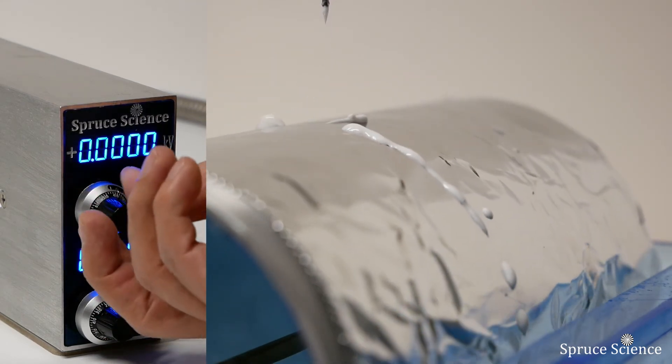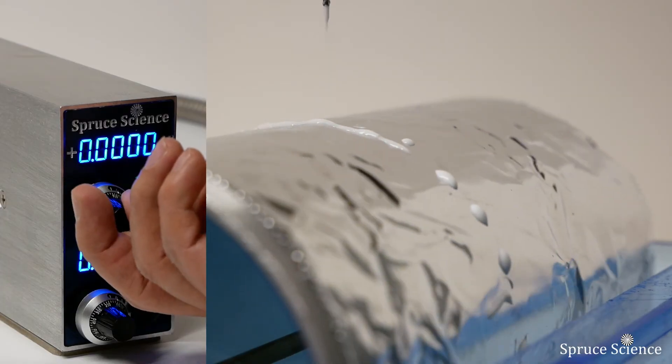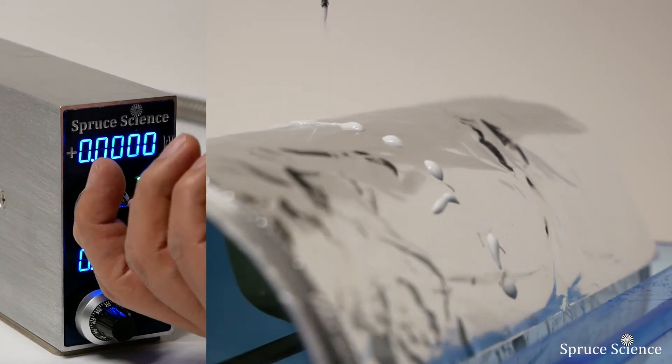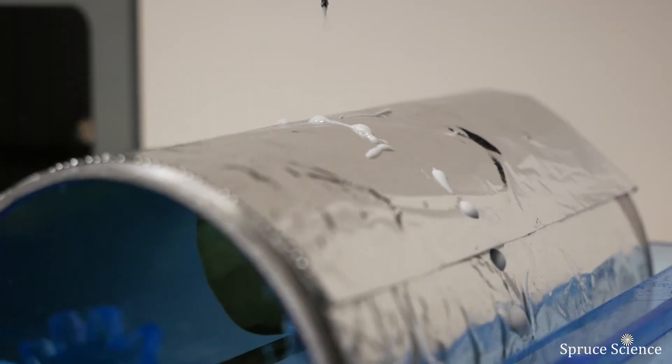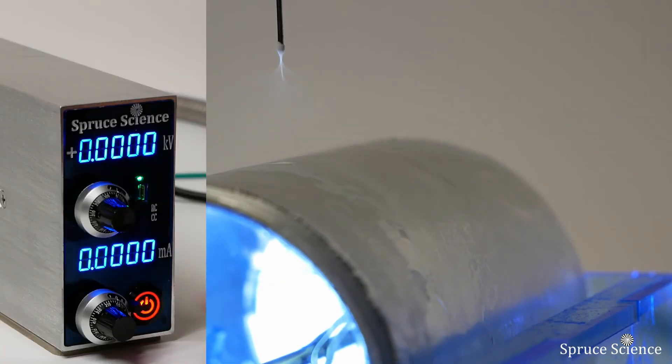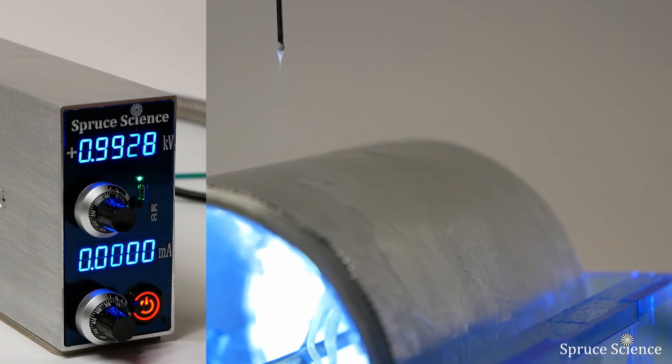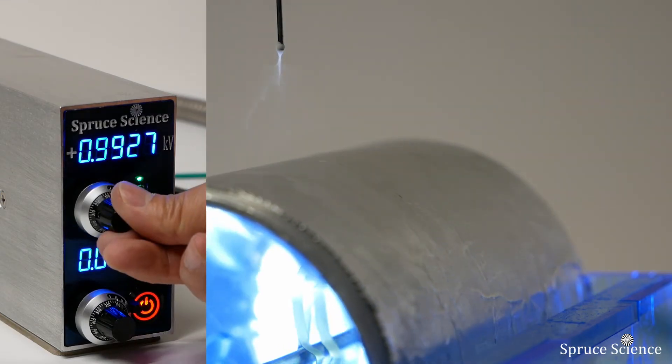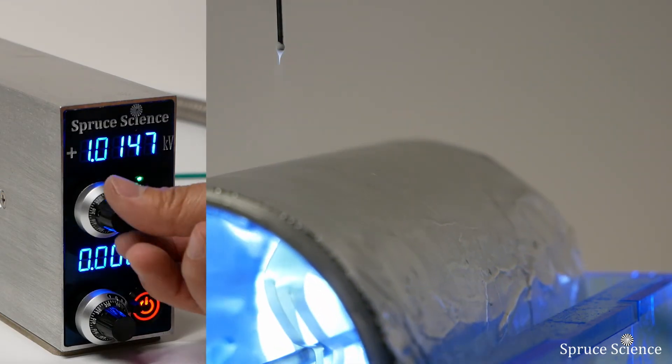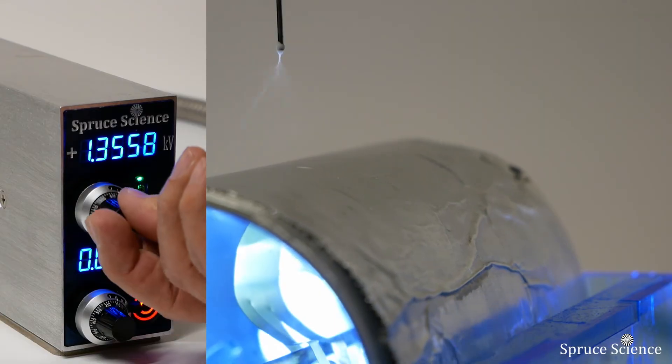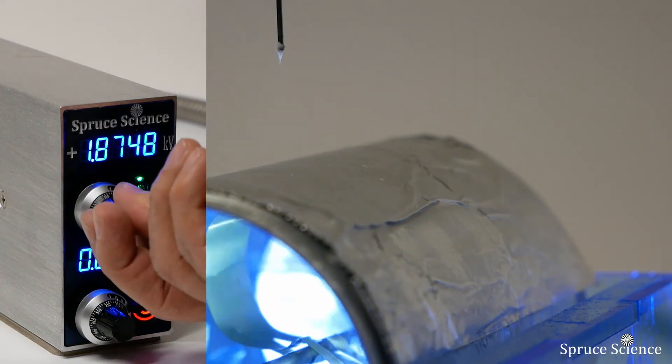Next, set the high voltage using the dial indicator. When everything is in place, turn on the high voltage output. Observe the electrospinning action and adjust the high voltage value, collector speed, and pump flow rate to get the desired result.